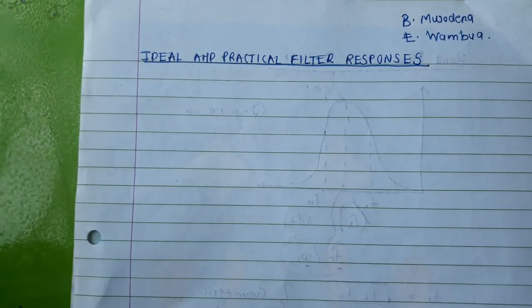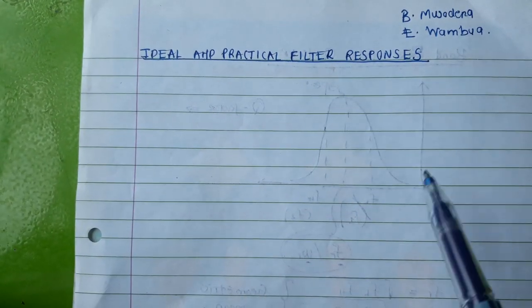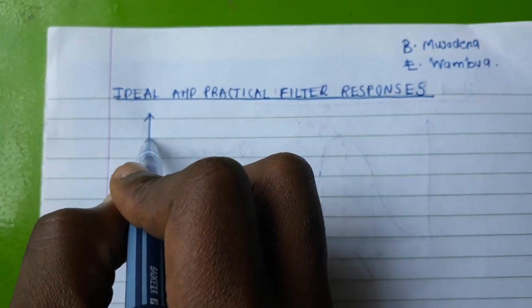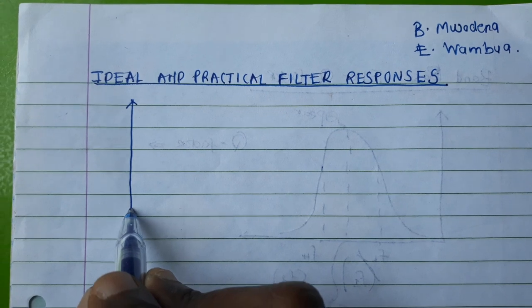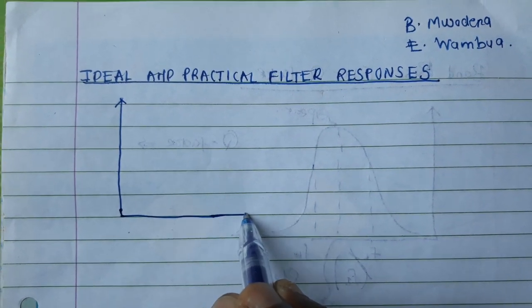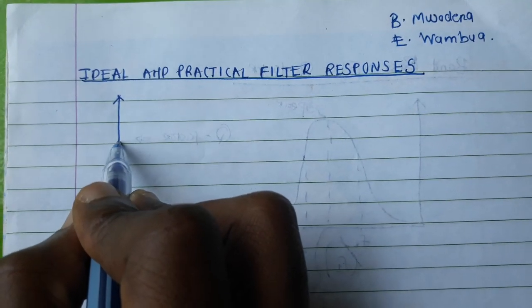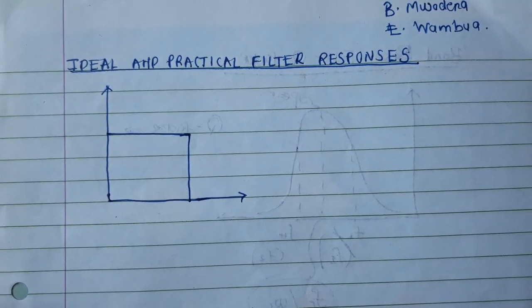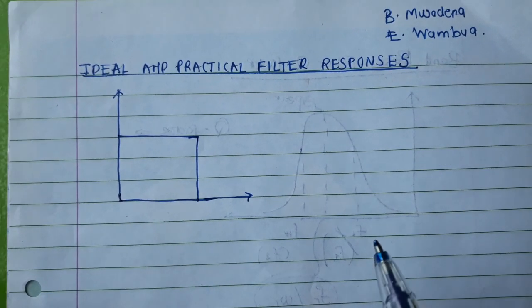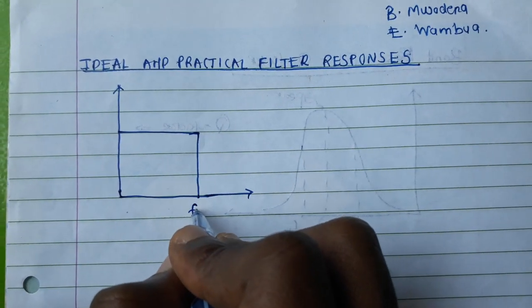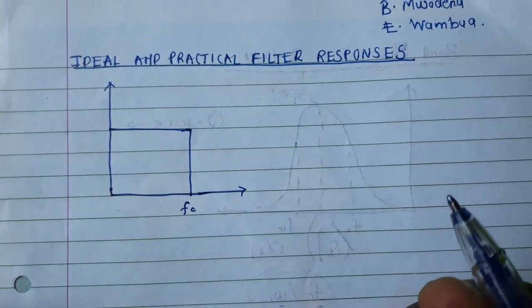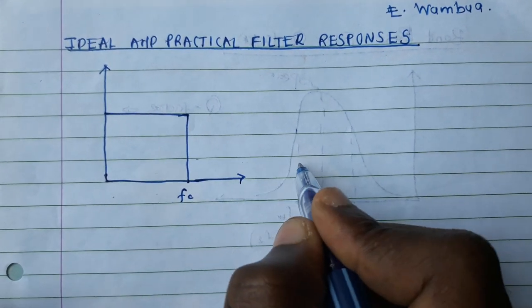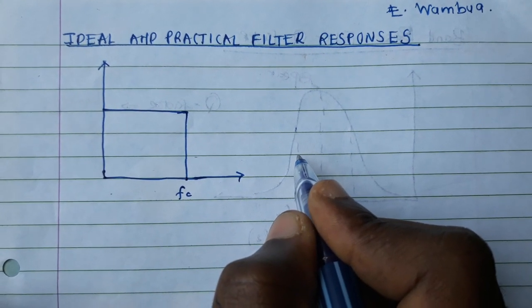Now, let us look at ideal and practical filter responses. An ideal response is a response that usually mimics a brick wall characteristic. What this means is that at exactly the cutoff frequency, fc, the unwanted signal is taken to zero.